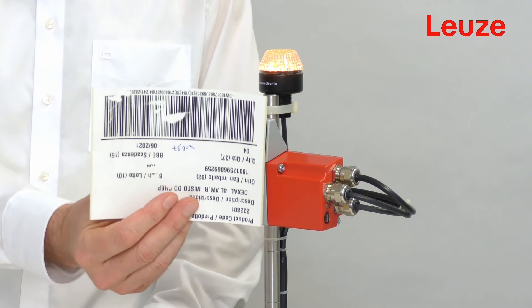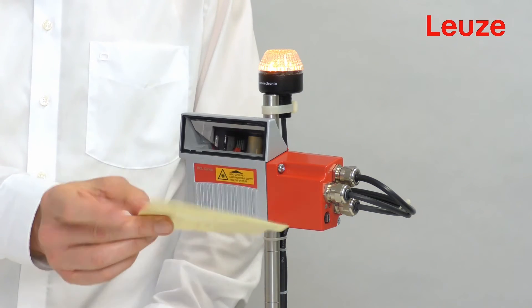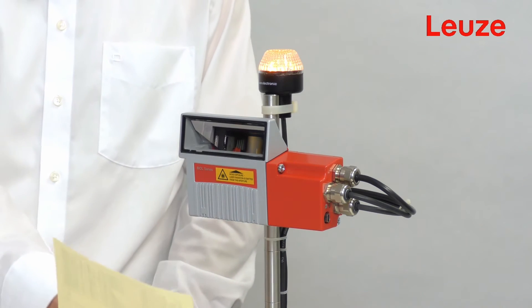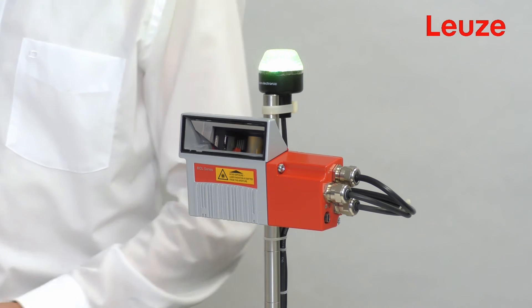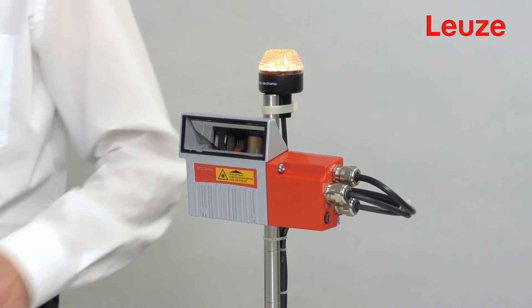We have a damaged code here. Normally, such a code leads to a no-read. We pass the label with the code through the reading field. And as we can see, the code was successfully read by our BCL300i despite the damage.